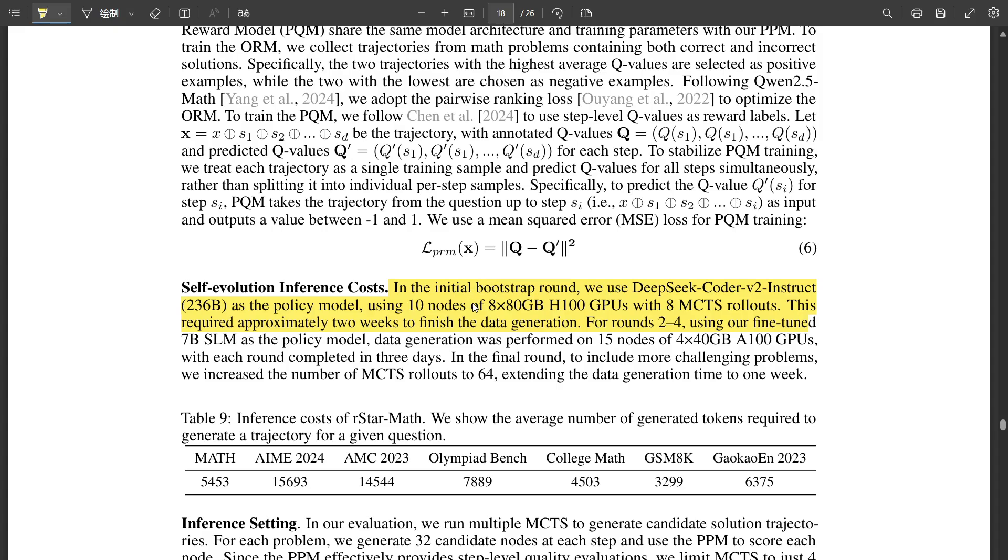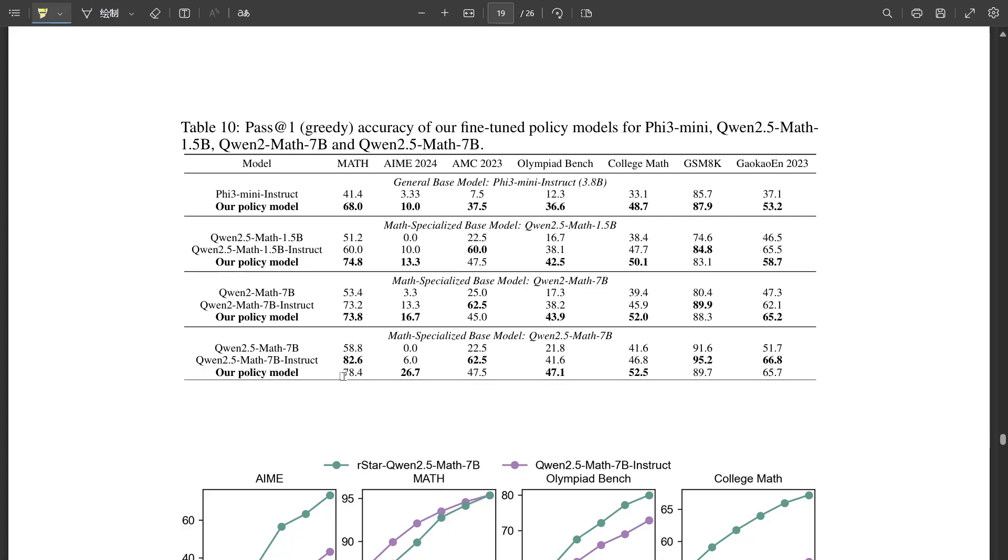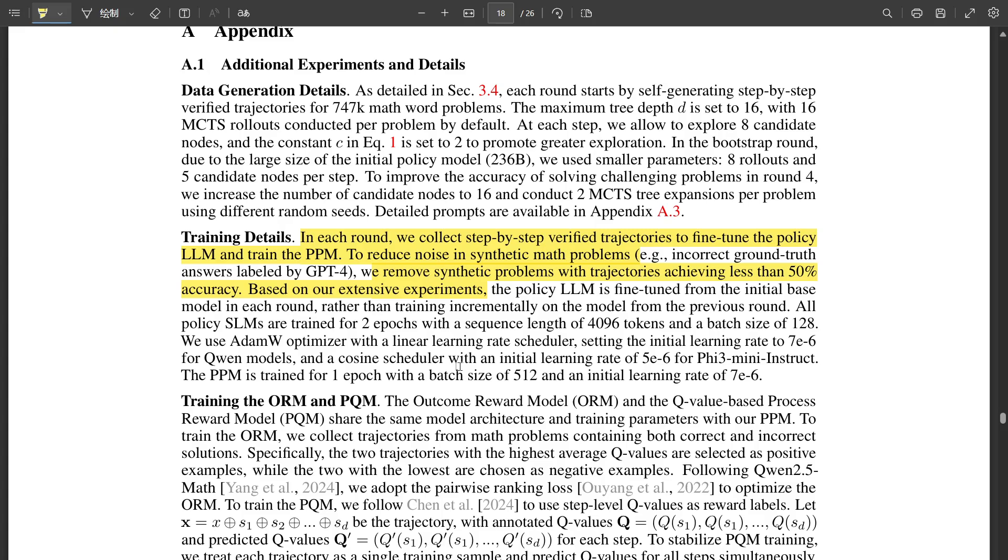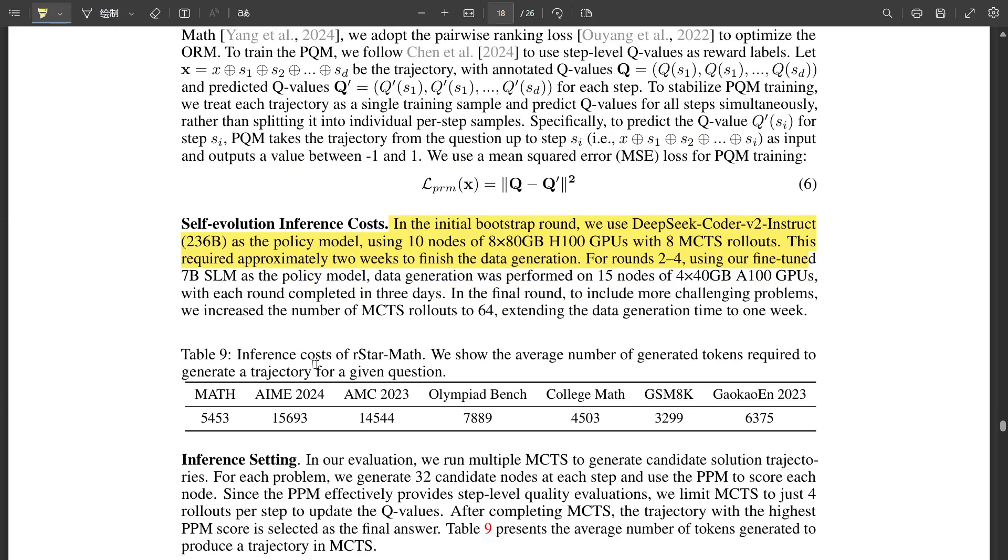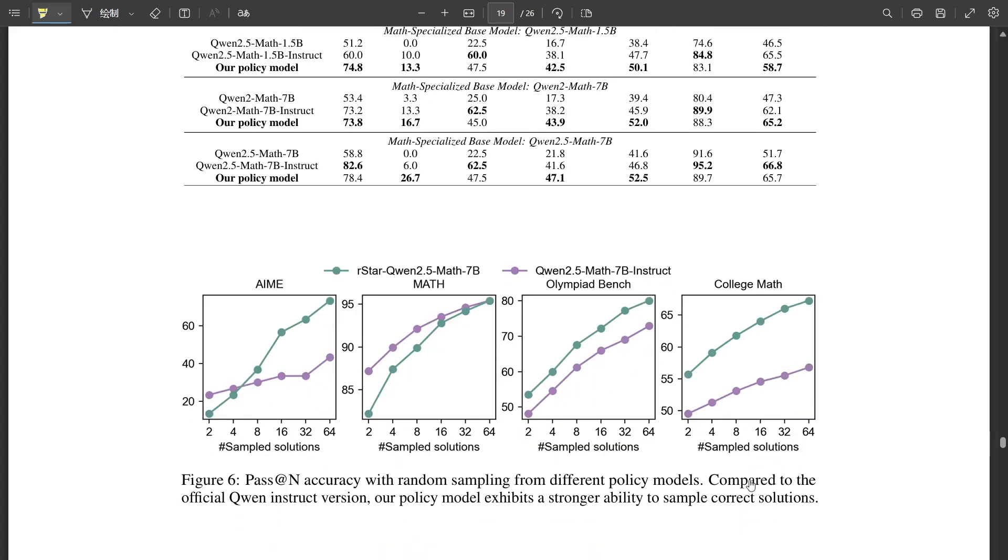And the impact goes way beyond the classroom. Where else? Think about scientific research. Scientists could collaborate with AI to tackle those complex equations, explore new frontiers in fields like physics, chemistry, even economics. AI could become an indispensable tool for discovery, accelerating our understanding of the world around us. It's like having a research assistant that can not only crunch numbers, but help us make sense of those numbers, uncovering those hidden patterns and generating new hypotheses. Precisely. And it's not just about solving existing problems. It's about pushing the boundaries of math itself. AI could help mathematicians explore those new concepts, discover hidden connections, and maybe even prove theorems that have stumped us for centuries. That's pretty profound. It's like having a co-explorer in this vast and intricate world of mathematics.